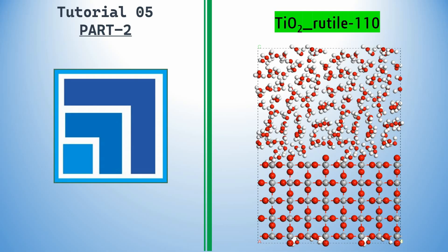Dear friends, this is my tutorial 5 in Material Studio, Part 2. In the last video we learned how to create this TiO2 rutile 110 surface. In this tutorial you will learn how to create a water cluster to place on top of the TiO2 surface for molecular dynamics simulation.